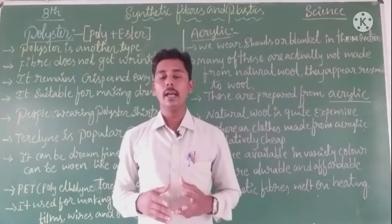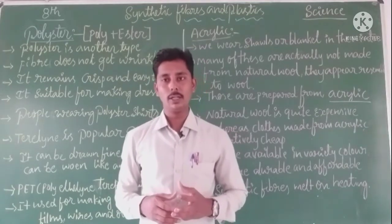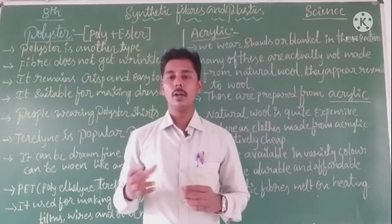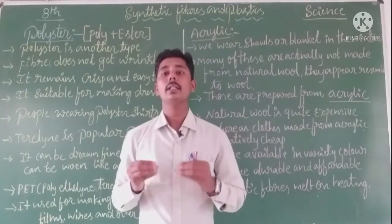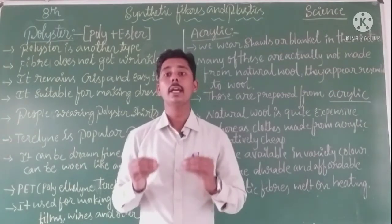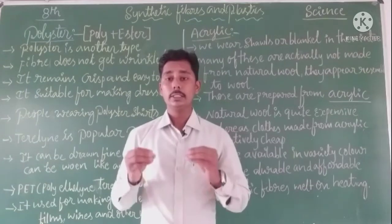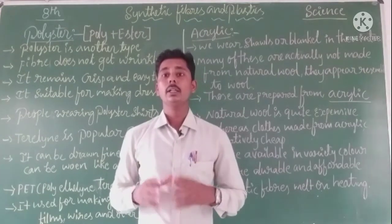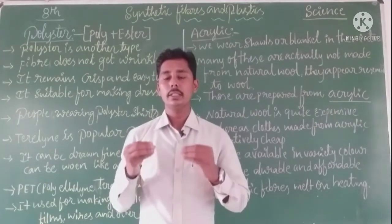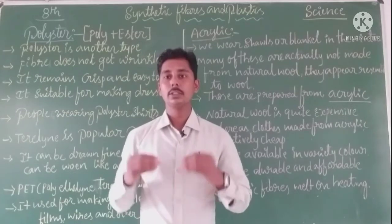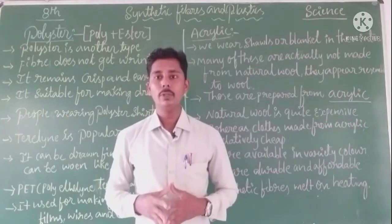We also learned two types of synthetic fibers: rayon and nylon. Rayon is called artificial silk because it looks like silk fibers and is made by the chemical treatment of wood pulp, which is a natural raw material. Nylon, however, is not made from any natural raw materials — it is made from pure chemical substances only.